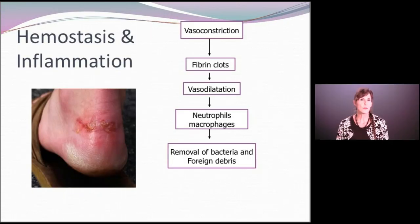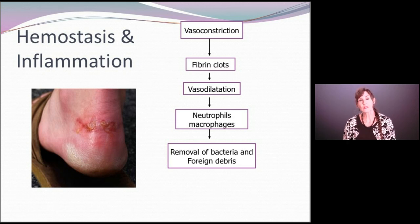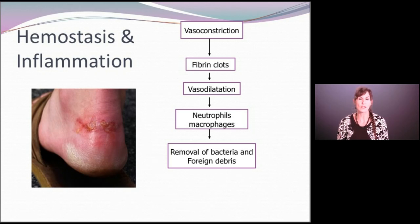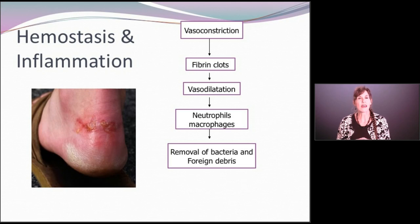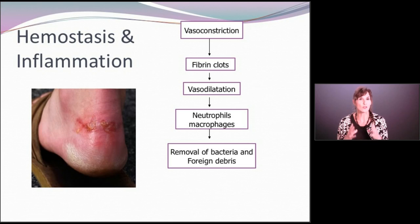With hemostasis and inflammation, when there is an injury or trauma of some sort to the host — whether a traumatic wound, pressure injury, or vascular ulcer — the immediate response is an effort to try to stop and control the damage and stop the bleeding. What happens initially is vasoconstriction in the wound to try to reduce the amount of blood flow going to the site of injury.